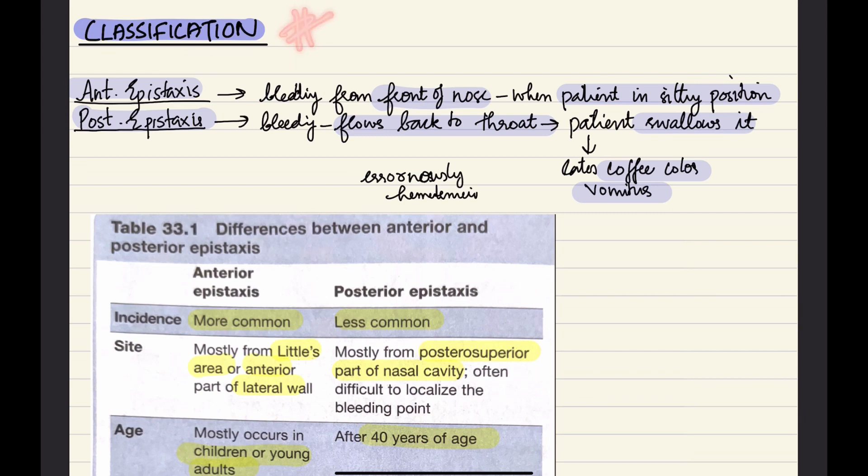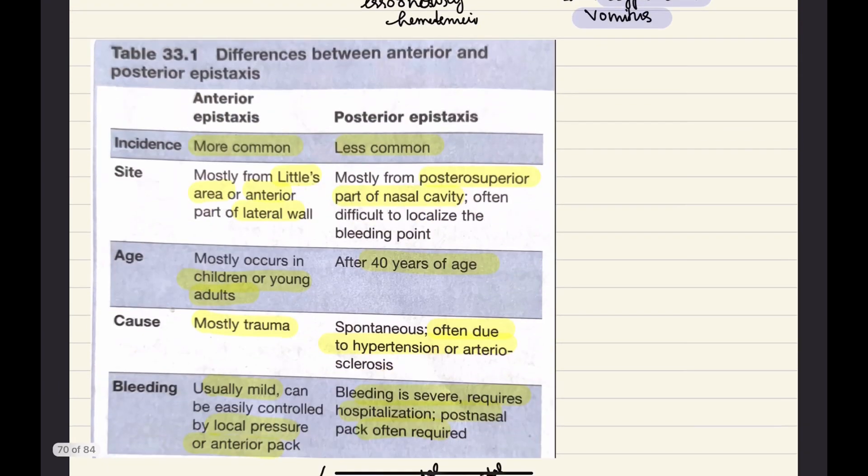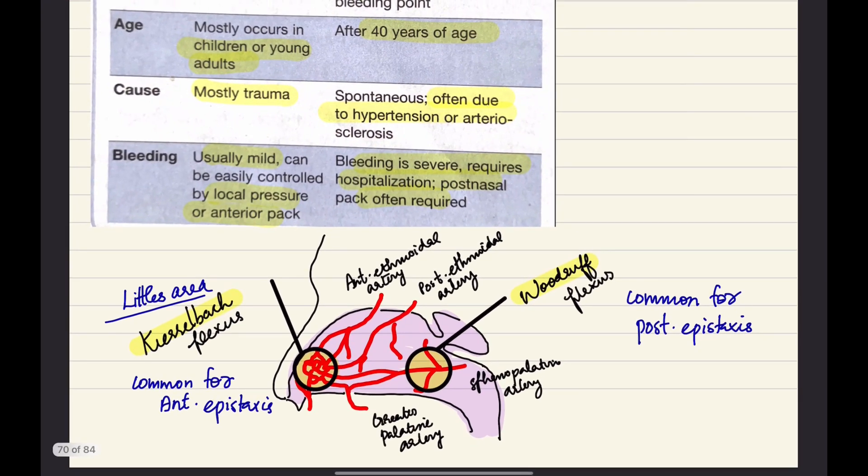Classification of epistaxis: we have anterior epistaxis and posterior epistaxis. Anterior epistaxis is bleeding from front of the nose when the patient is in sitting position. Posterior epistaxis is bleeding which flows back to the throat and the patient swallows it, which later comes as coffee-colored posterior vomitus. Little area is the common site of origin for anterior epistaxis, whereas Woodruff's plexus is common site for posterior epistaxis.